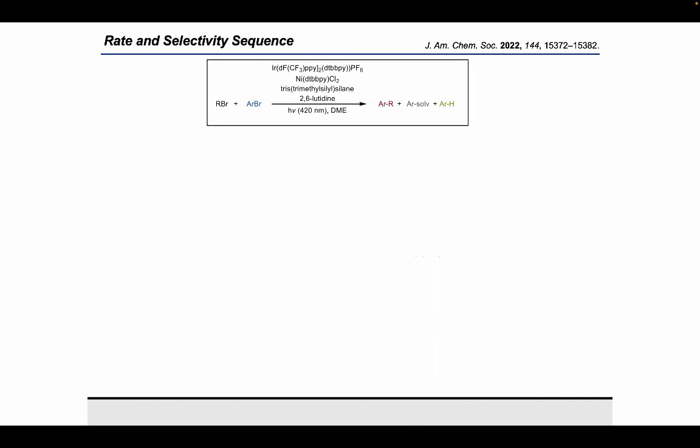We then did what I'd describe as a more classical kinetic analysis. Looking at the reaction, coupling an alkyl bromide with an aryl bromide, using an iridium photocatalyst, a nickel catalyst, a silane and a base and light, we generate our cross-coupled product and both of those side products. We did the systematic variation of each of the seven components during this reaction and monitored how that affected the rate of reaction, as well as the rate of formation of our main product and the two major side products.